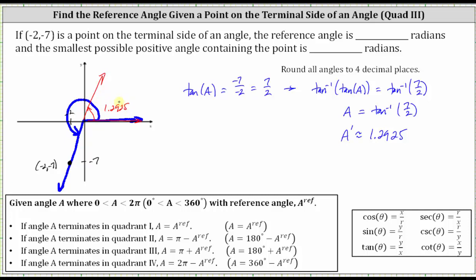Notice how this is also the reference angle of the angle, and since this angle and the angle we are looking for have the same tangent function value, the reference angles would also be the same. So now we know the reference angle for our angle is also 1.2925 radians, the same as the reference angle of the angle in quadrant one. Let's go ahead and record this above. 1.2925 radians.